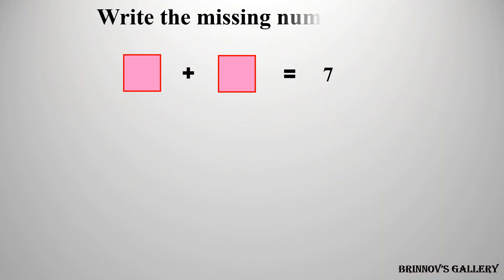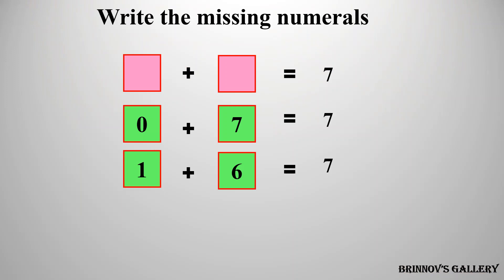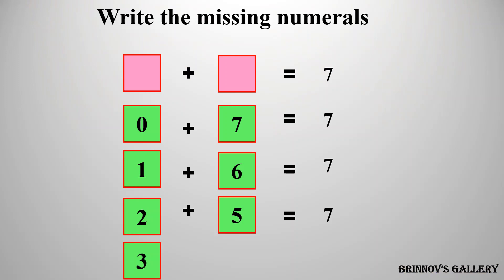Write the missing numerals. Zero plus seven is equal to seven, or we can also have one plus six is equal to seven, or two plus five is equal to seven, or three plus four is equal to seven. We can choose any option from these possibilities to fill the missing numerals.